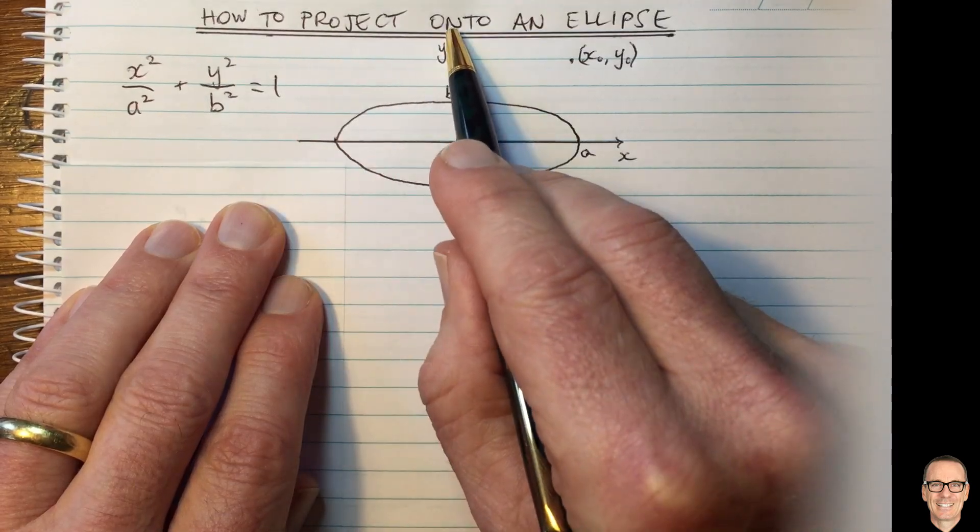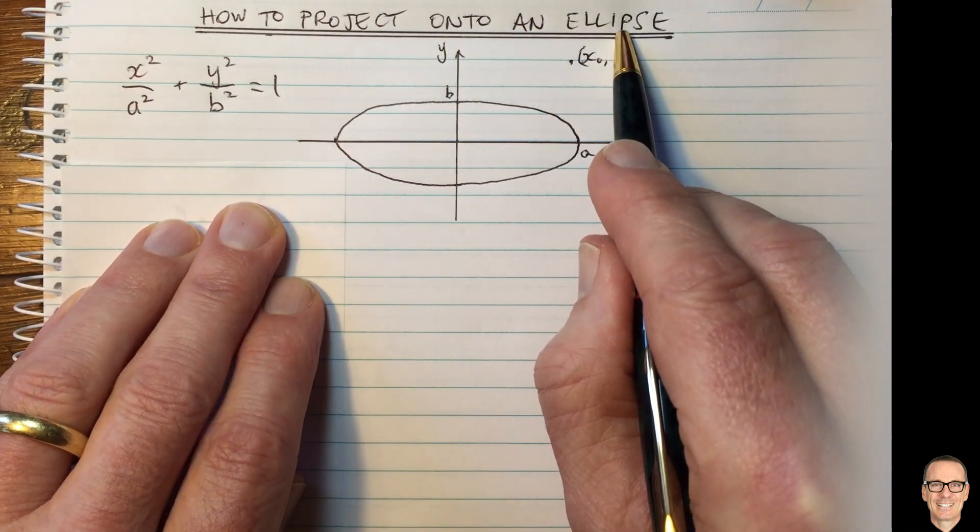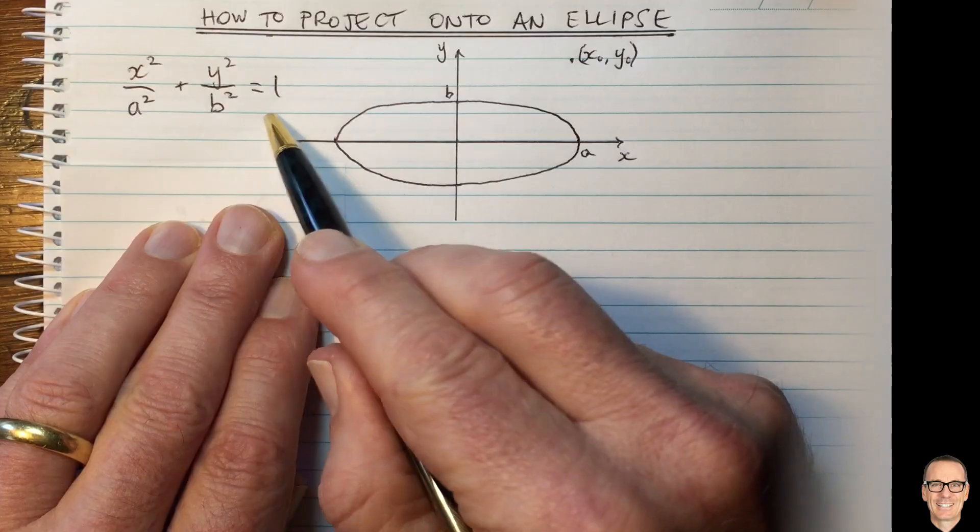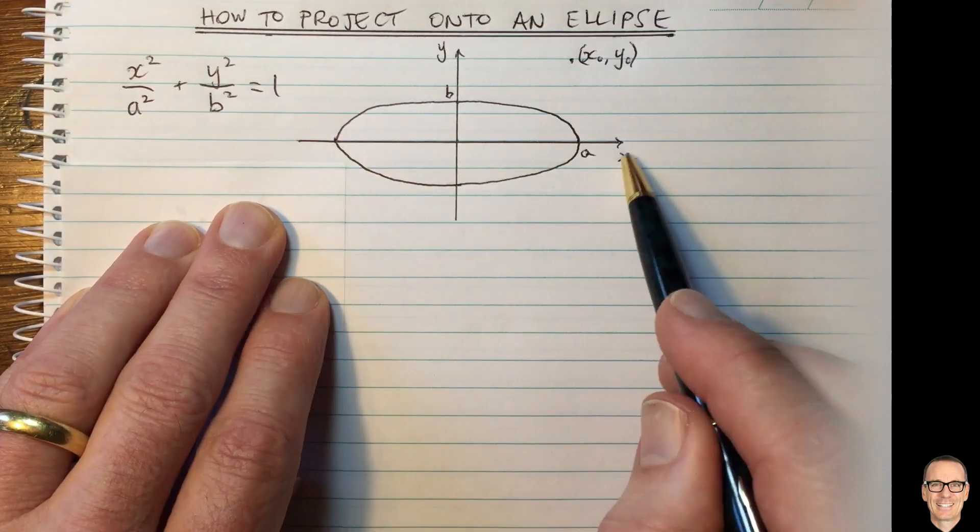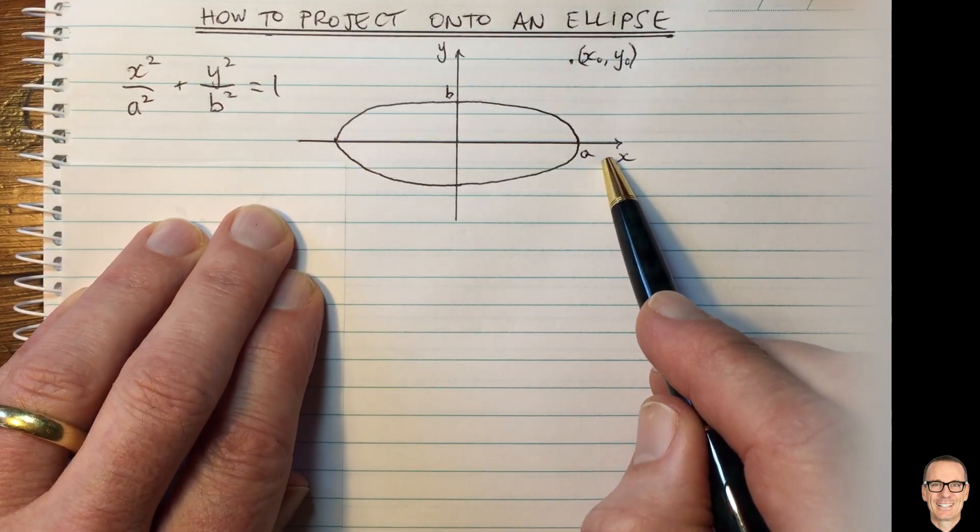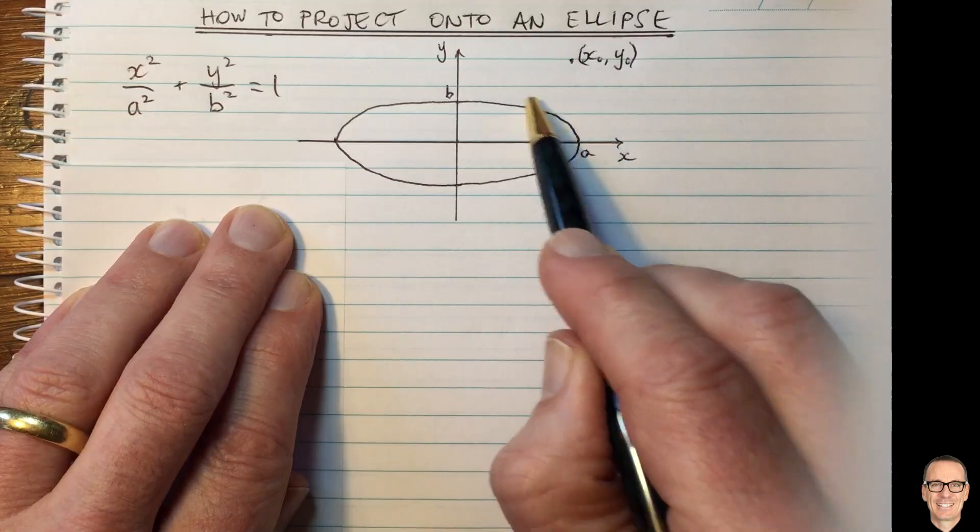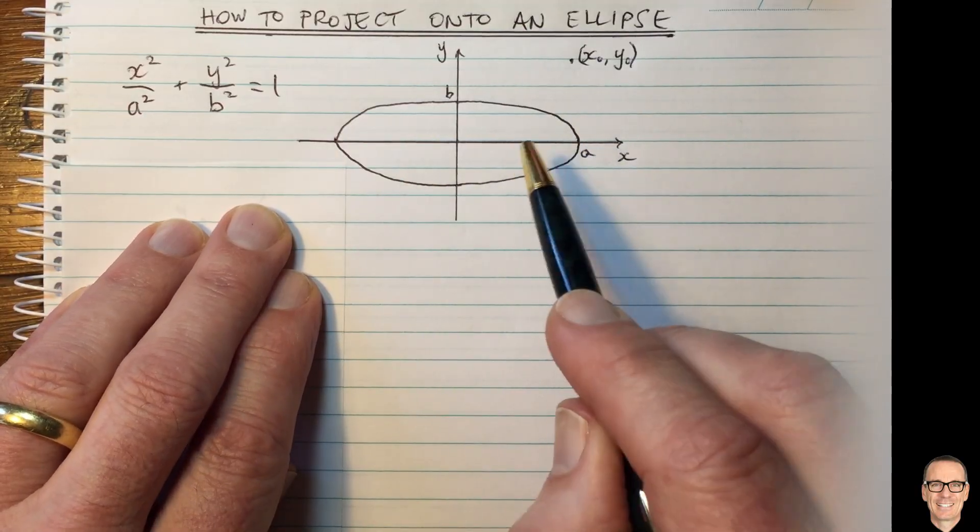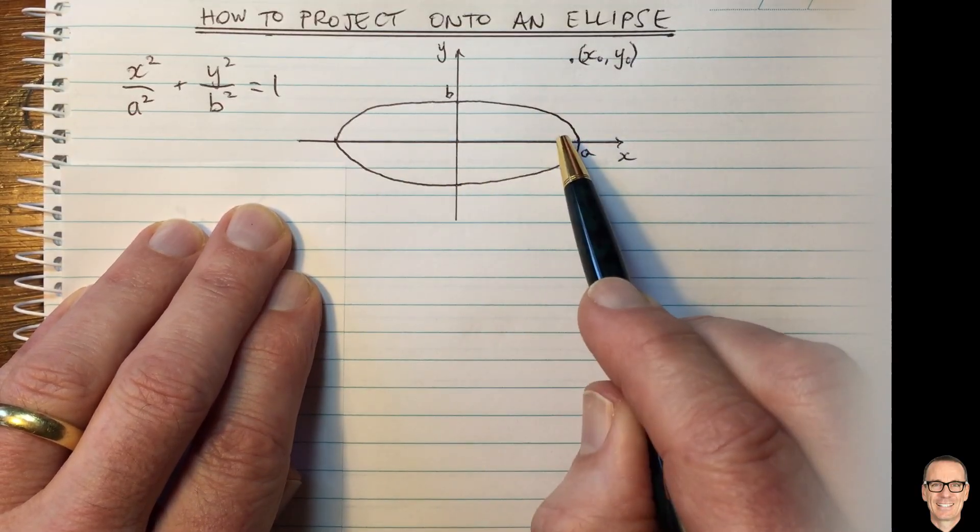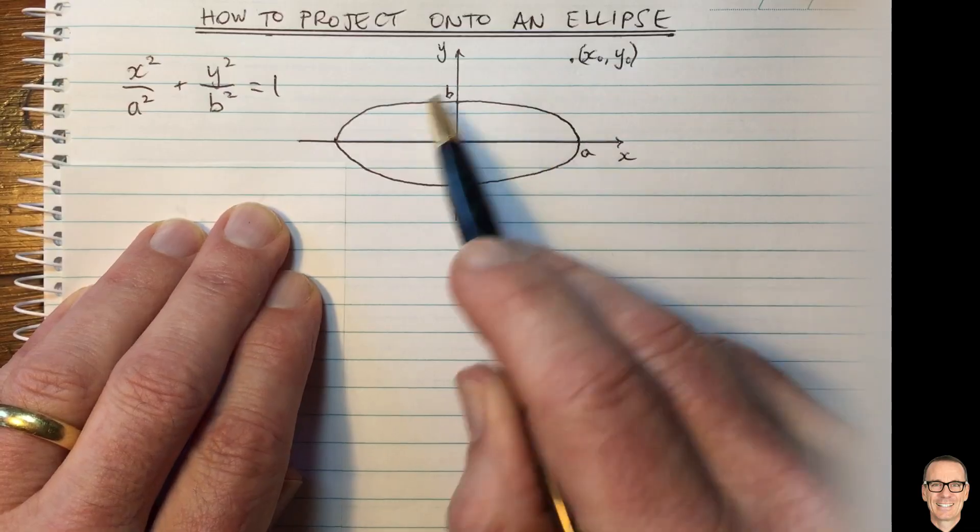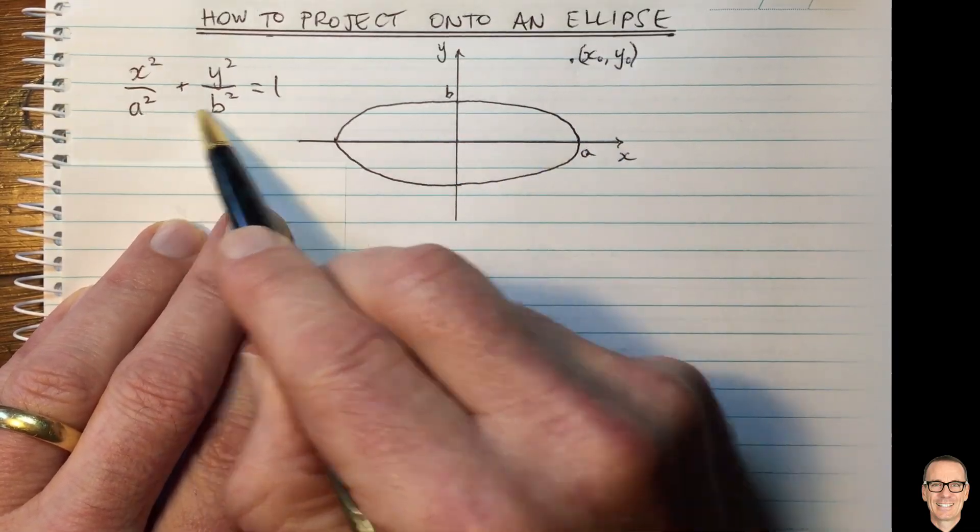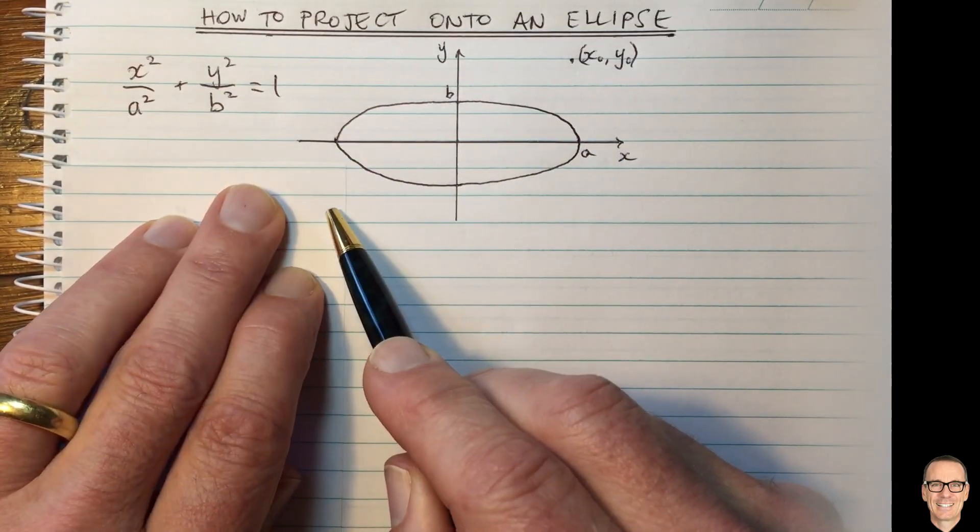How do you project a point onto an ellipse? Here we've got a basic equation for an ellipse which has this form here and we've got a point we'd like to project onto this ellipse. If you've got an ellipse that's centered somewhere else or rotated, then you can do shifting and rotation to get it into this form and then use these procedures.